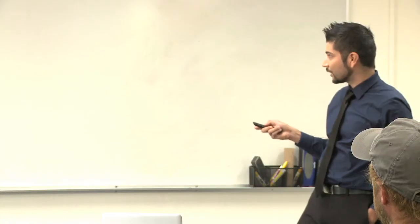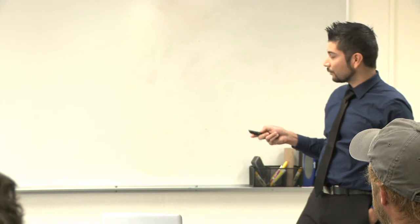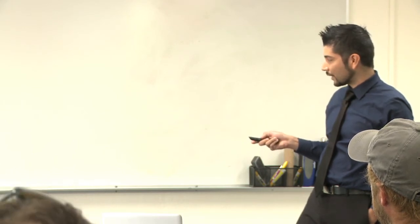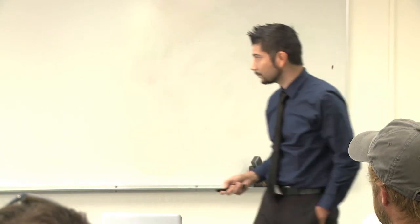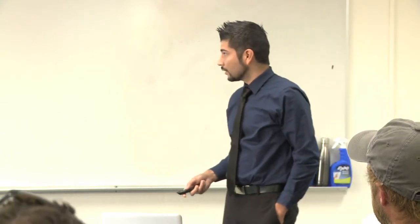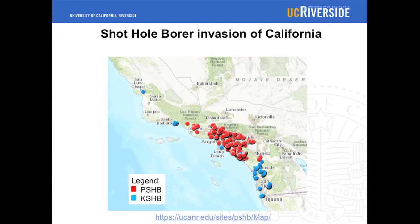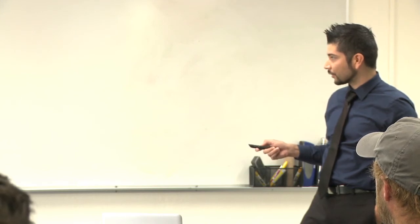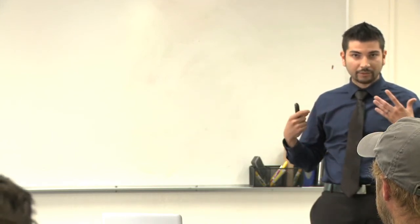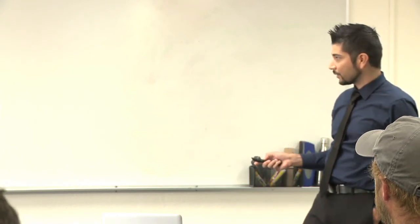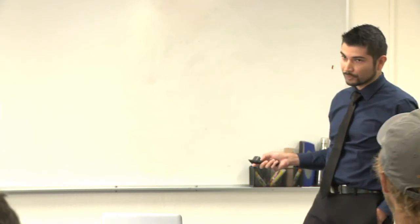We have two assays: one detecting all of the fungi associated with polyphagous shot hole borer, and another identifying the fungi associated with Corotio shot hole borer. This could help with the distribution map to track the progress of Corotio shot hole borer as it's moving northward, and polyphagous shot hole borer as it moves south. This big cluster was done prior to us having knowledge that there are actually two different beetle species, so some of these regions may already have Corotio shot hole borer, and this diagnostic tool can help get positive identifications.